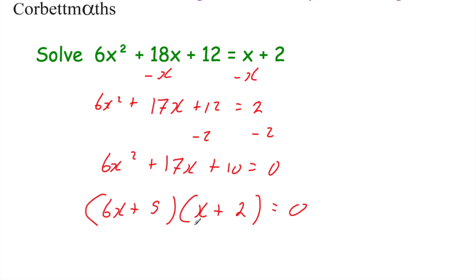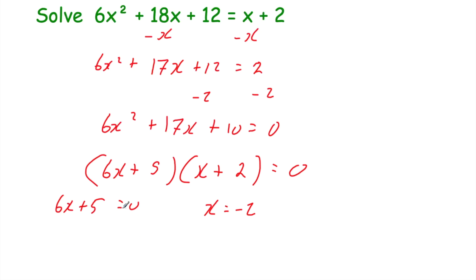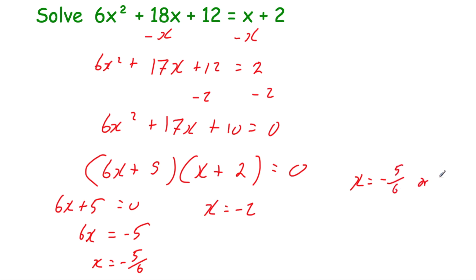So we have our two brackets: (x + 2)(6x + 5) = 0. For (x + 2) = 0, x = -2 — straightforward. For (6x + 5) = 0, taking 5 away from both sides gives 6x = -5, then dividing by 6 gives x = -5/6. So the two solutions are x = -5/6 or x = -2.